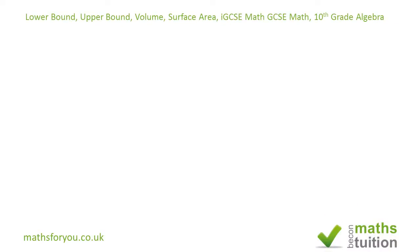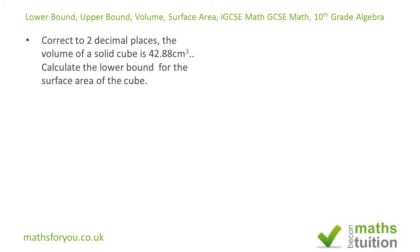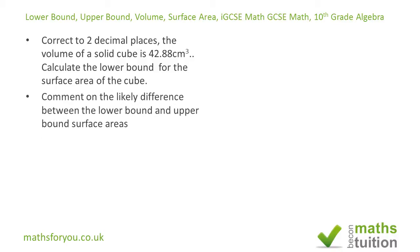Hello and welcome to this exercise on lower bound and upper bound — the third in my series on this topic. It's from a past IGCSE higher tier exam question. It says: correct to two decimal places, the volume of a solid cube is 42.88 cm³. Calculate the lower bound for the surface area of the cube.